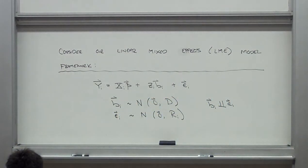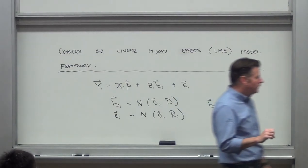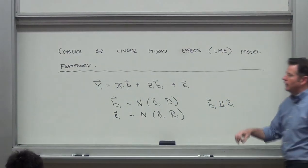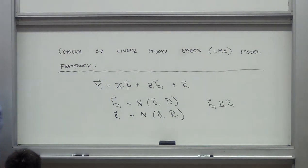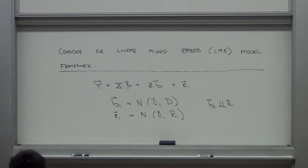Question: if you have a random slope, do you have to have a random intercept? Technically no, but practically, if you're going to have random slopes, you almost always want random intercepts in the model as well. There might be special design situations where you fix the intercept, but nine times out of ten, if you've got random slopes, you'll want to allow people to vary where they start.